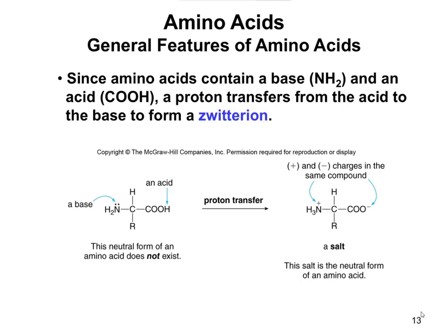I mentioned the acid-base properties of amino acids in the first lecture, but I want to touch on it more in this specialized section. Amino acids are typically found as what we call zwitterions. A zwitterion means you have both a positive and a negative charge in the same compound. The NH3 is a plus, the carboxylate group is COO minus — you have them both in the same compound. That's a zwitterion, and that's the normal form of an amino acid.